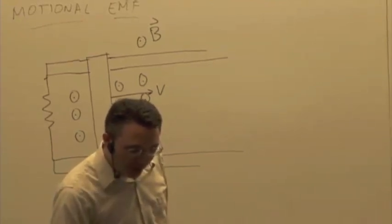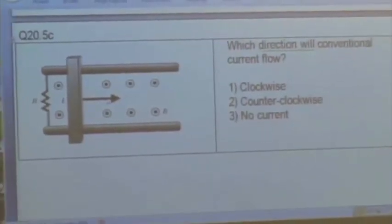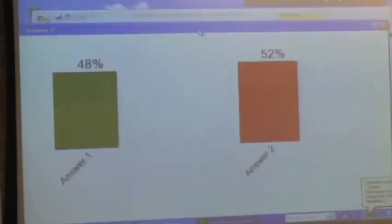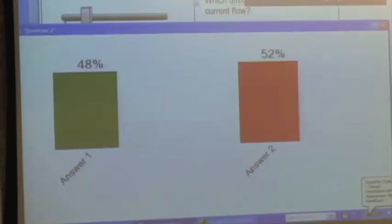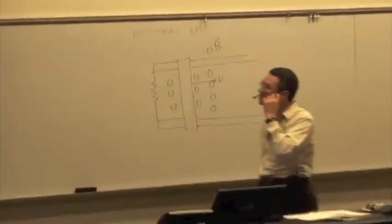So the magnetic field is pointing out. The bar is moving to the right. What's the direction of the conventional current in this case? See if we can determine what we had. See if you can remember what you had to do. If you need to look back at your notes from last time. Okay, evenly split. Very few remember what we did last time. So let's do it. Let's try it again then. That's fine.